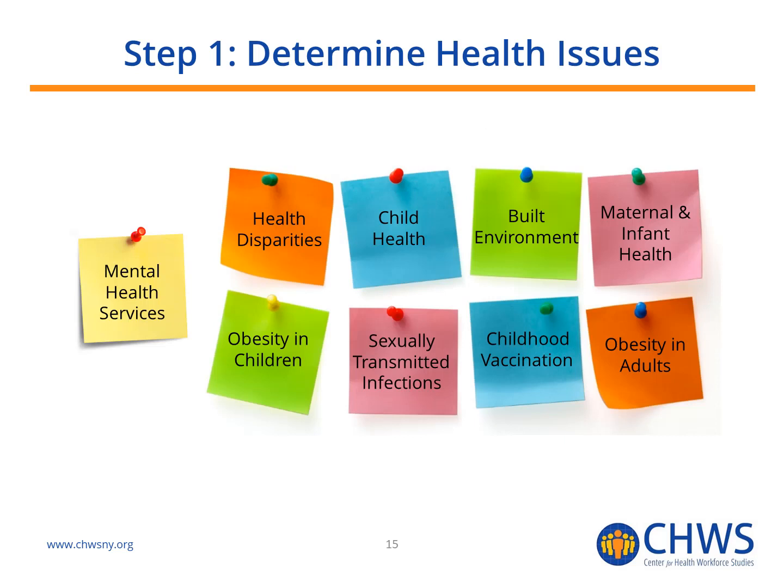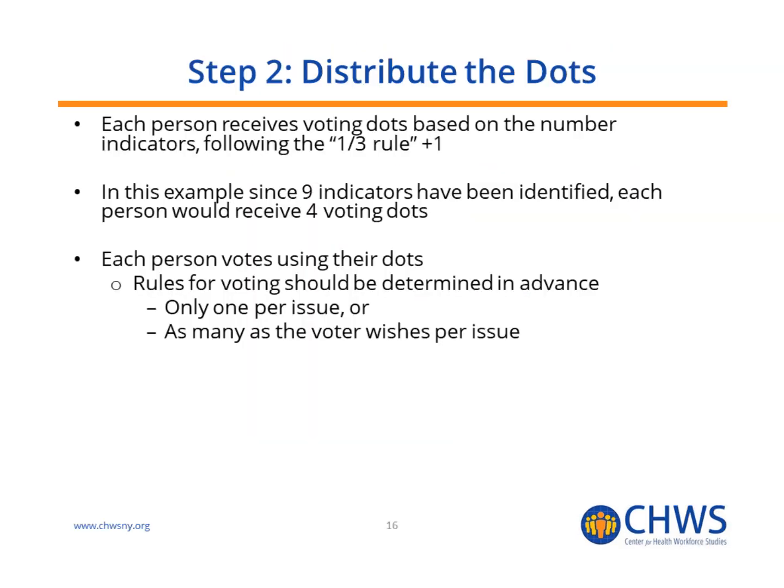In this example, 9 issues were identified to vote on. One common approach to determine the number of dots per person is taking one third of the issues identified plus 1. Since 9 issues were identified, each participant would get one third of 9 plus 1, or 4 voting dots. There should be fewer dots per person than the number of issues identified to ensure that priorities are identified, and the number of dots should be enough to clearly identify the most pressing issues without overwhelming the participants.